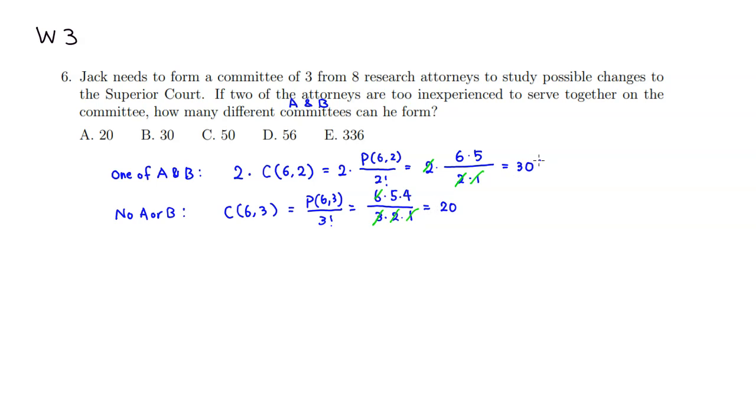So the total would be, so 30 plus 20, so you have 50 ways to do it. So answer is C. All right, that's it. I hope that this was clear. Here we go.